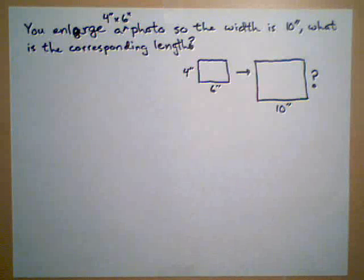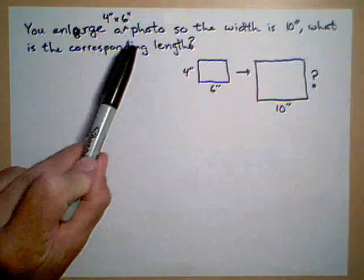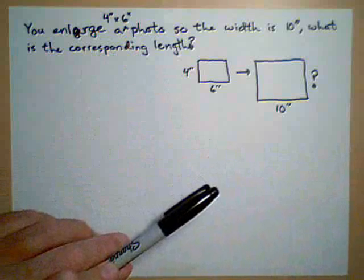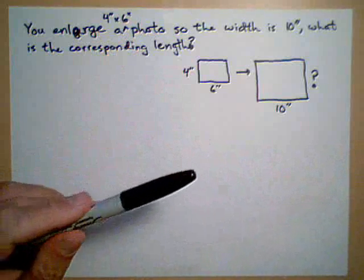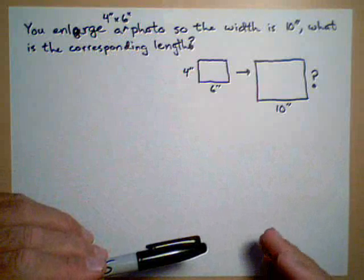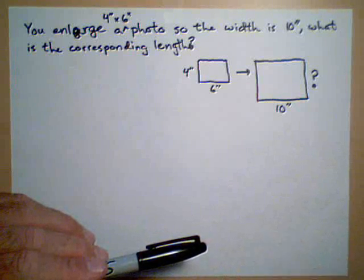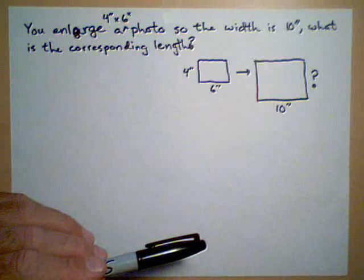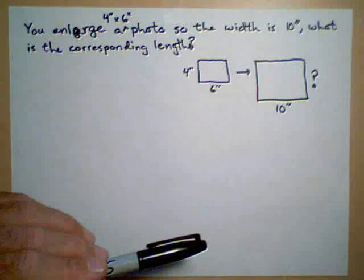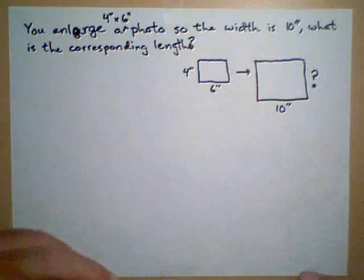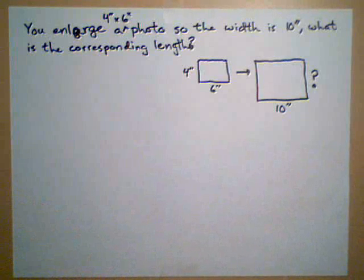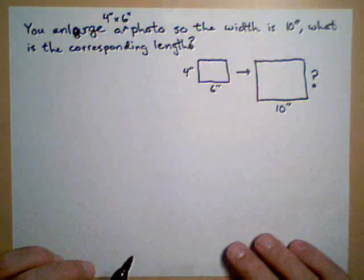We're going to look at a couple different ways to solve this problem. What we're doing here is proportional reasoning. While this is a photo enlargement problem, this would work in any type of problem where scaling is involved. For instance, if there's a model built and you have a scale on the model, you can scale up to what the actual size would be. Or looking at a map is a common example where they give you 1 inch is equivalent to however many miles and you need to figure out the distance. This is one specific problem, but it can generalize to a whole bunch of types of problems.